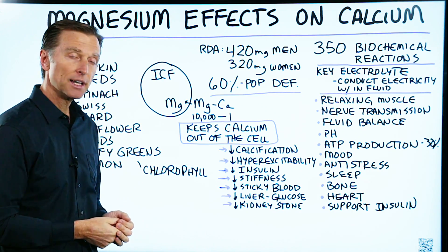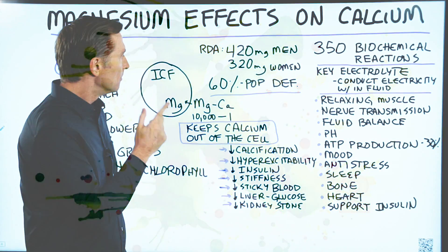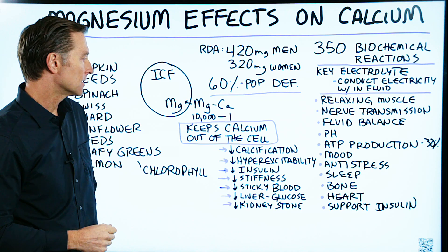We need vitamin K2 to actually help mobilize the calcium out of the soft tissue, and magnesium is just as important.